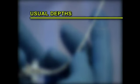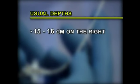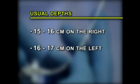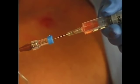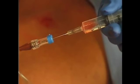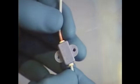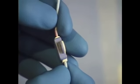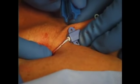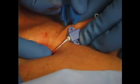Usual depths are 15 to 16 centimeters on the right and 16 to 17 centimeters on the left. Final confirmation of correct catheter placement is by x-ray. Each port is then aspirated and flushed with sterile saline. The catheter is secured in place by placing the catheter holder on the catheter and securing it to the skin with staples or sutures.